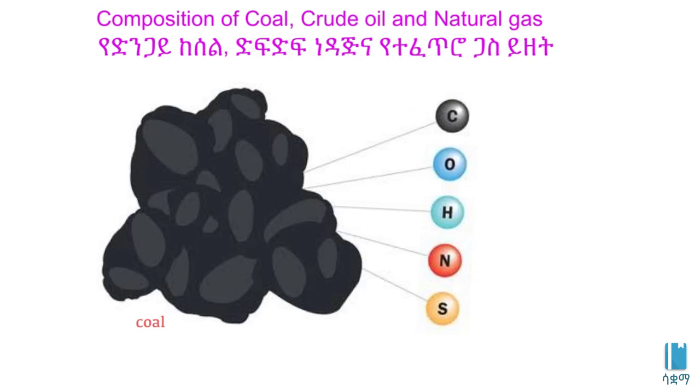Coal is composed of the following: nitrogen, oxygen, carbon, sulfur, and hydrogen.